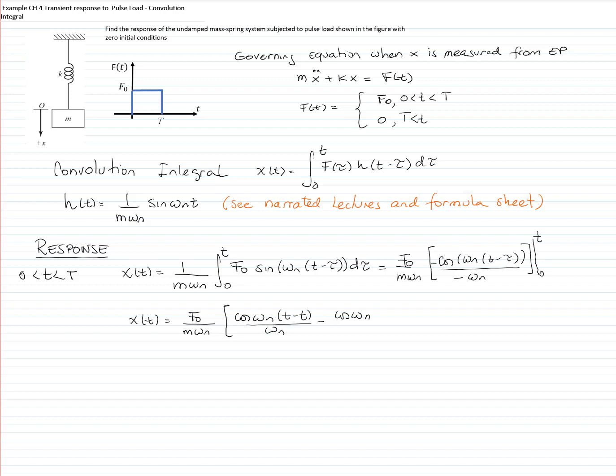t minus t will give me 0, which is cosine of 0 is equal to 1, and then the final response for all times greater than 0 and less than capital T will have the form of F sub 0 over m omega n squared, bracket 1 minus cosine omega n t.